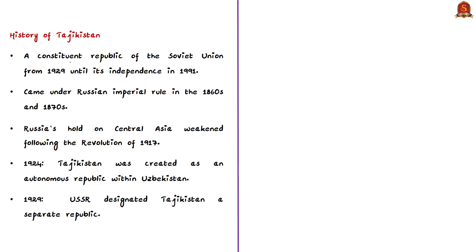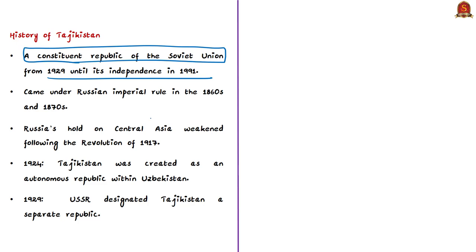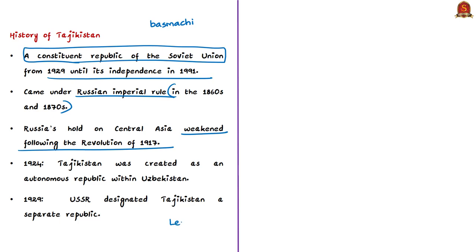Tajikistan was a constituent republic of the Soviet Union from 1929 until it became independent in 1991. The Tajik people came under Russian imperial rule in the 1860s and 1870s. Russia's hold on the Central Asian region weakened after the 1917 revolution, during which indigenous guerrillas called Basmachi fiercely contested Bolshevik control of the region. Only by 1925 were the Bolsheviks able to re-establish full control. The Bolsheviks were part of Russia's Social Democratic Workers' Party, led by Vladimir Lenin, which seized control of the government in October 1917.